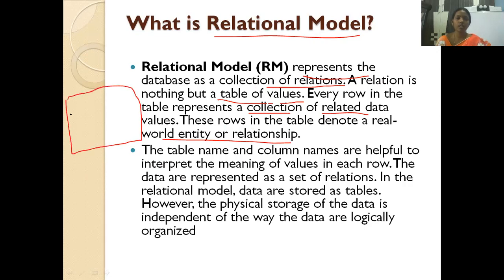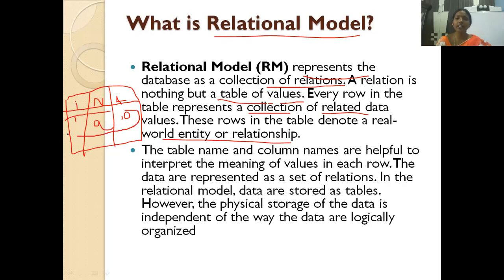For example, consider a student table with columns: student ID, student name, and age. A row such as '1, A, 10' represents one student record. Each row is a collection of related data values for that entity. Number two student is B, age 28. These rows are related to the student table — and student is a real-world entity.